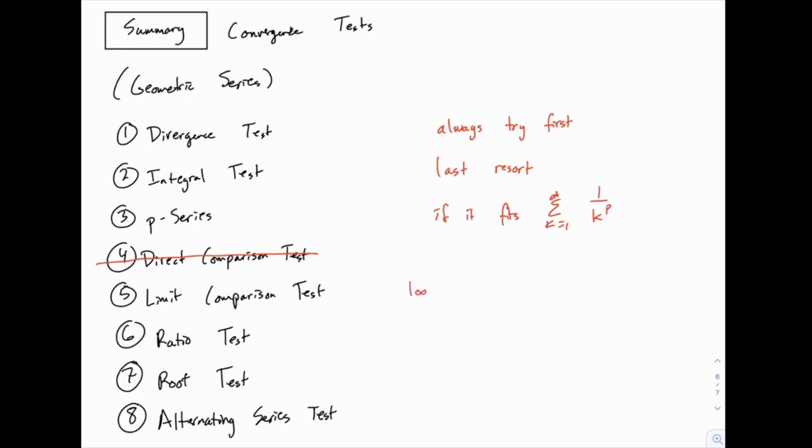So this would be if the series you're looking at looks like a geometric series or a p-series, but it's not exactly equal to one of those. You can try comparing it using the limit comparison test.